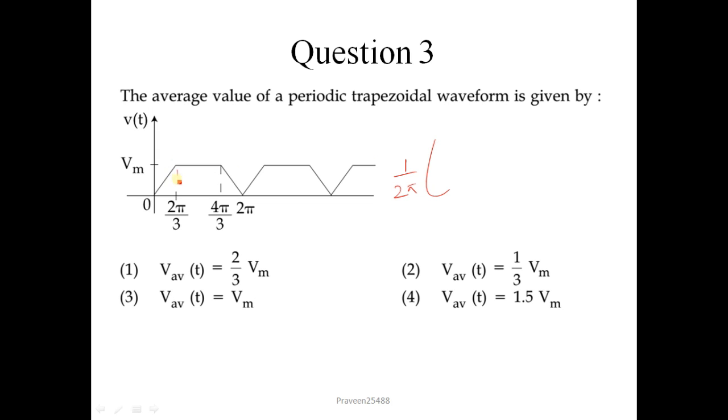To calculate this, multiply by 1 over 2 pi. So first, we will calculate the area of this trapezoid. So for this, I will calculate the area of first this triangle, which is 1 by 2 into 2 pi by 3 into Vm. So on calculating this, easily you can get 2 pi by 3 Vm. So first one is the correct answer.